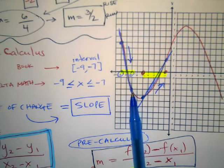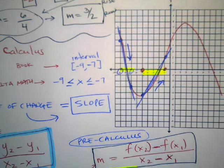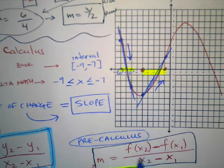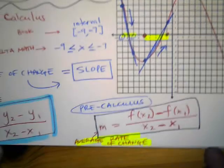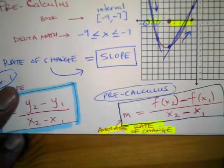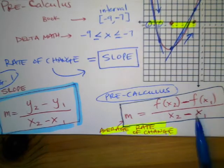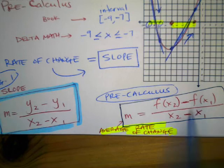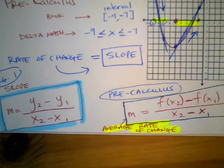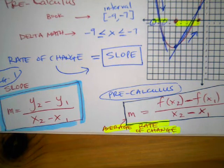So that's what an average rate of change is — they give you an interval, you look at that section of the curve, assume it's a straight line, and find the slope. That's an average rate of change. On the next video I'll work out the problems and show you how to do that.